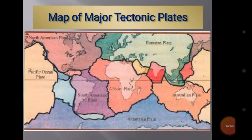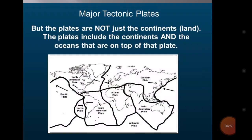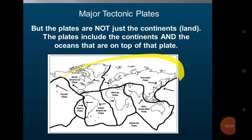One important thing to know is that these plates are not just a single continent. These plates include the continents and the oceans that are on top of that plate. The small boundary in black shows the continents, but the larger line shows the plates. So you can see that in each plate there is both water and land. You do not need to confuse continents with plates — plates consist of both continents and the sea portion.